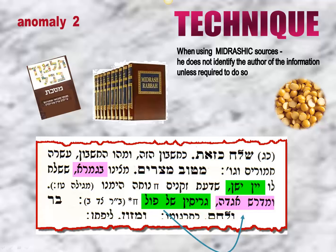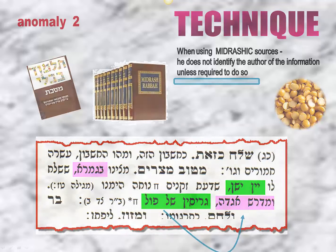There is a flip side to the rule, and that is that when Rashi does inform us of the sources, it is because that information is necessary to the commentary — either to respond to an implied textual difficulty, or to add a different dimension in support of the Pshat HaShel Mikra. Rashi does not identify the author of the information unless required to do so.